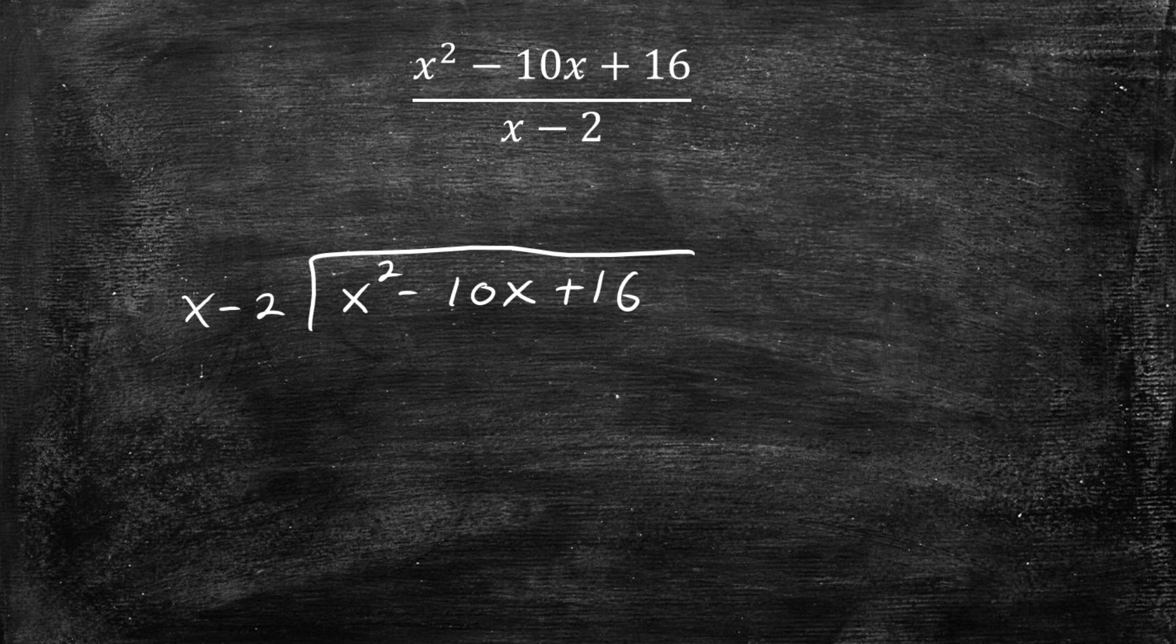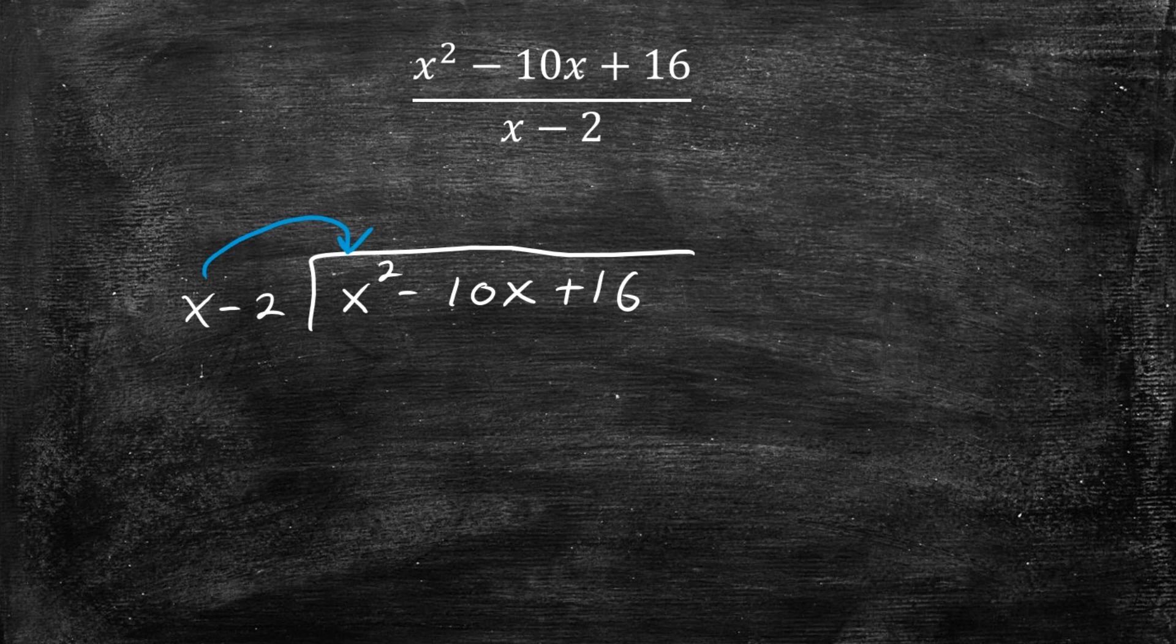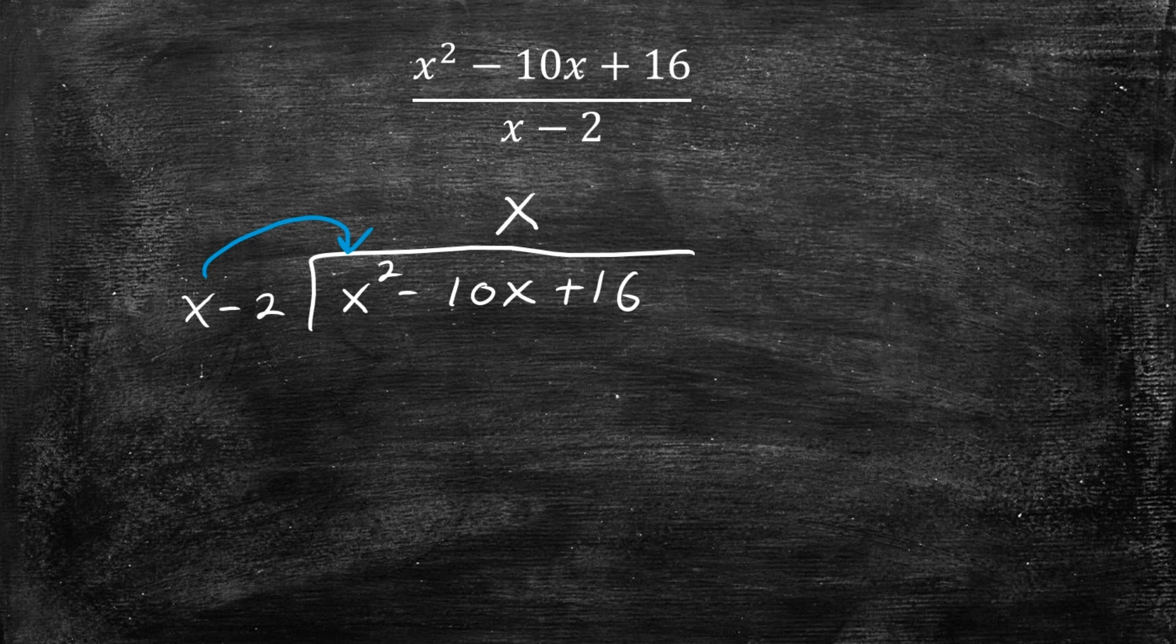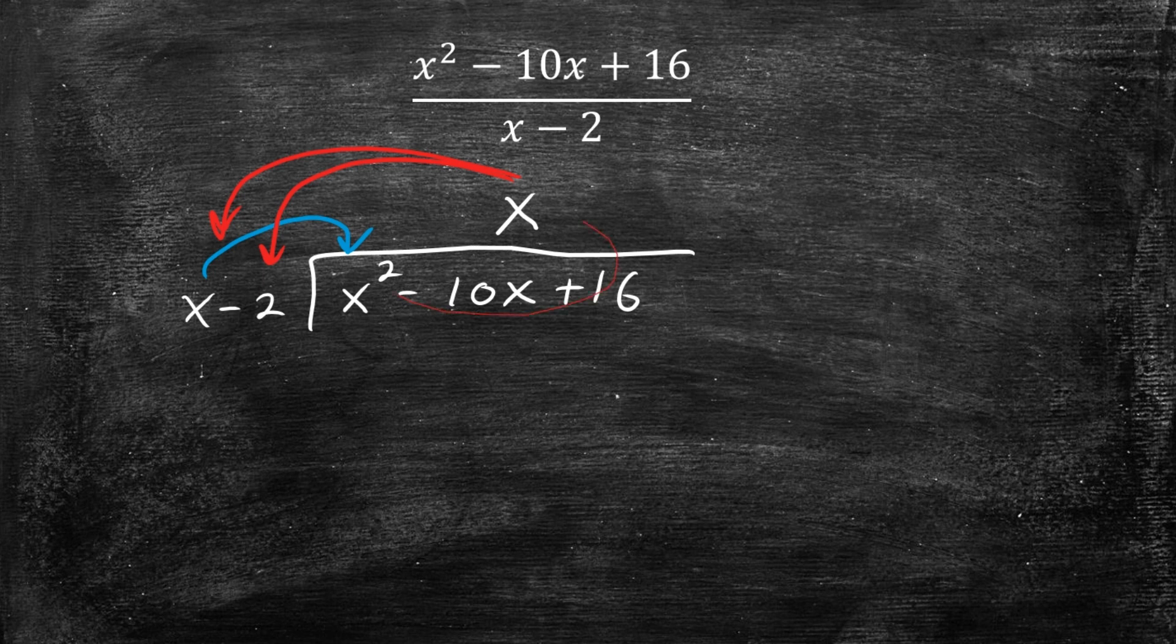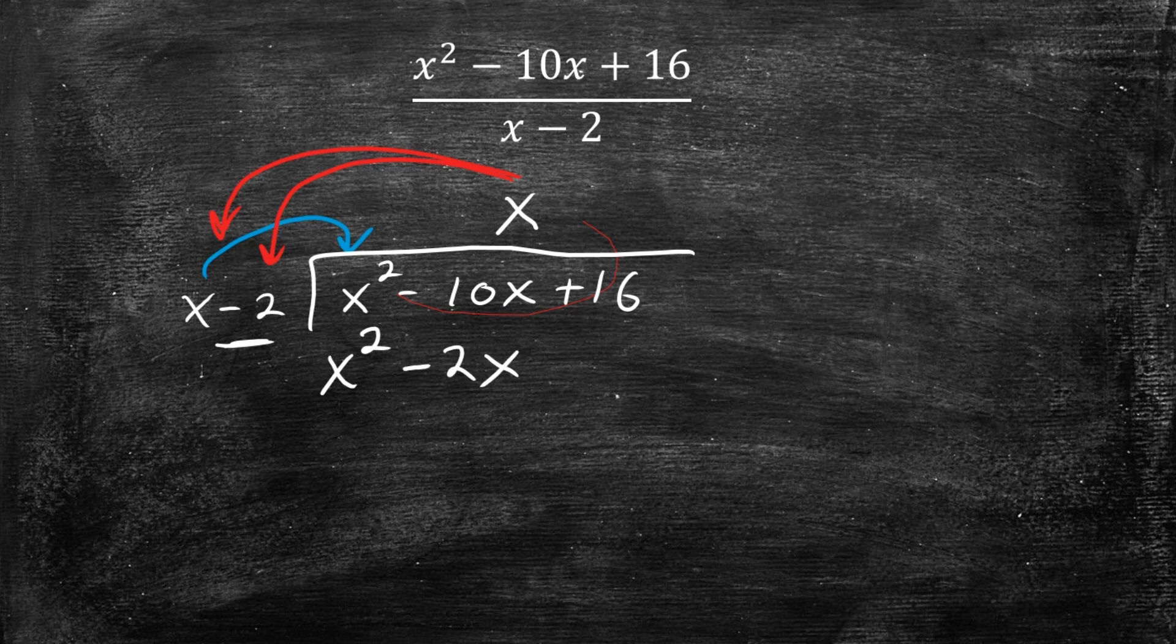And now what we do is we want to figure out how many times does x, the number in the front here, go into x squared. And that number is x times. So now we found that out, we're going to multiply this number, the x that we just found, to both of these numbers here and then subtract it. So x times x is x squared. Negative 2 times x is negative 2x.